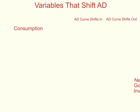The first component is consumption, and an example of consumption might be consumer confidence. Are consumers confident about the future economy? If they are very confident — we'll put a big plus sign here — if they're very confident about the future economy, then this is going to shift the AD curve out. Consumers are going to go out and buy houses and cars and big ticket items if they're confident about having a job in the future.